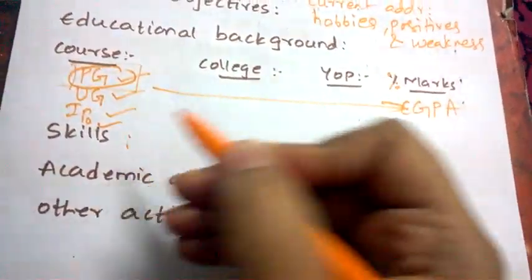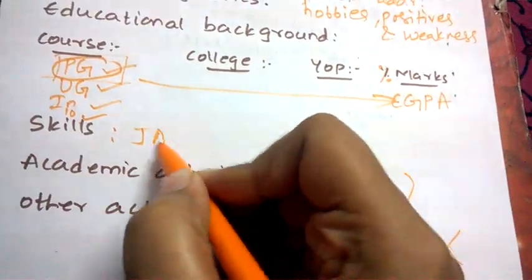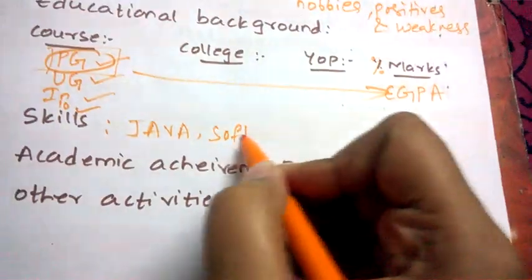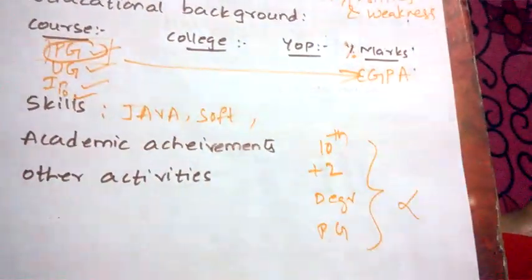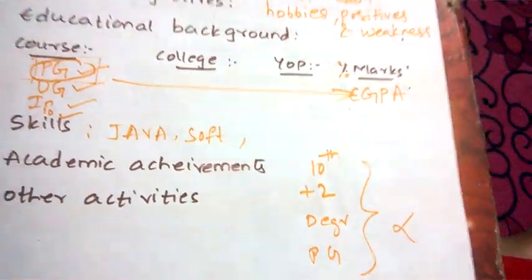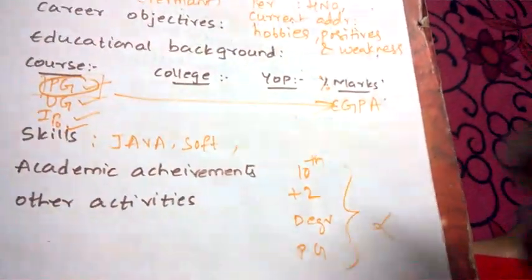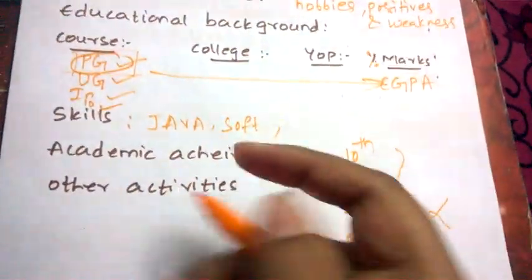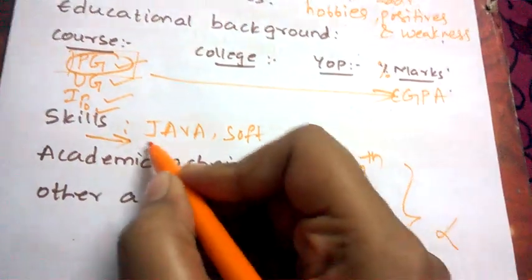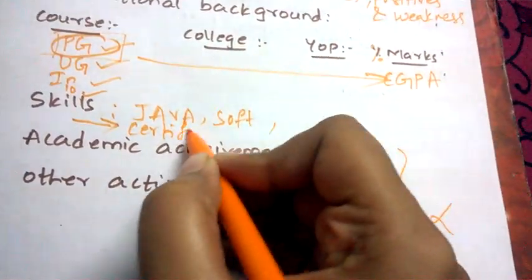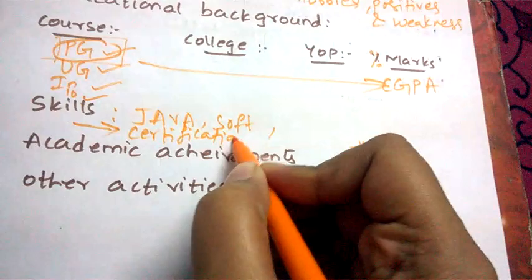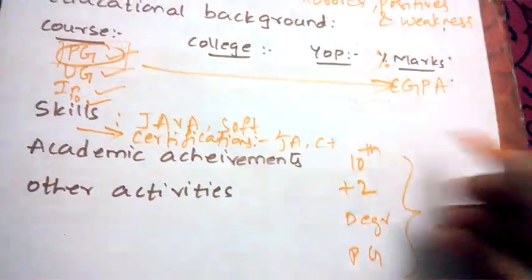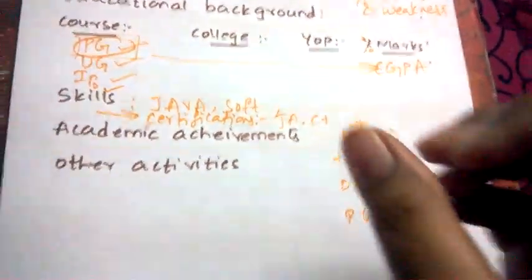Next, mention your skills — languages like Java, soft skills, or any additional skills relevant to your job profile. After skills, mention your certifications, such as Java, C, or C++ certifications. These will be an added advantage.